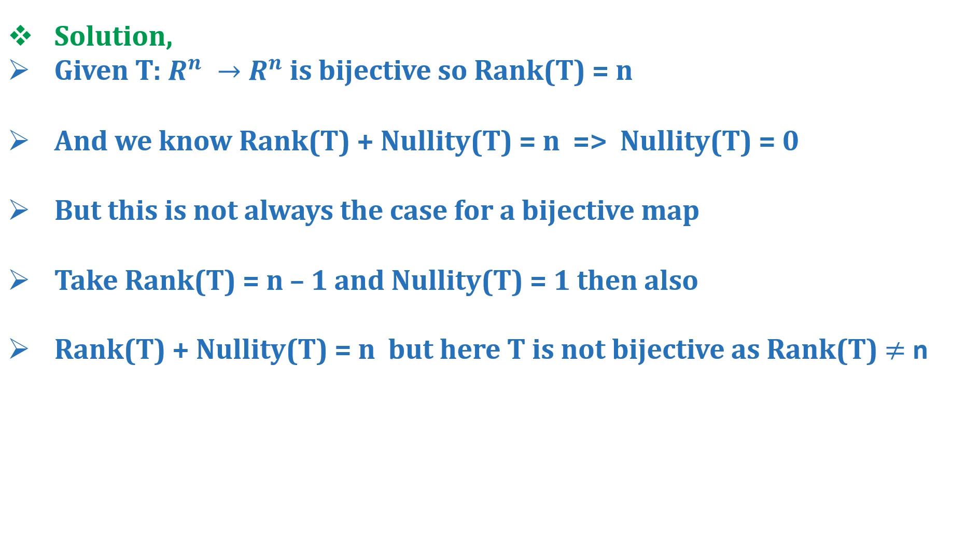But here T is not bijective, so Rank(T) ≠ n. Also, the rank-nullity theorem is not sufficient for a bijective map. Therefore, we get Rank(T) - Nullity(T) = n as the correct answer. Hence, the correct answer is option D.